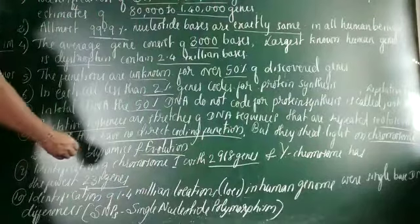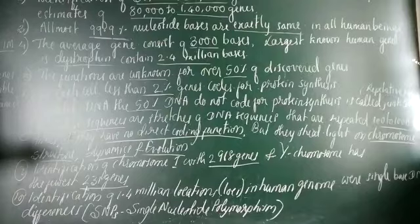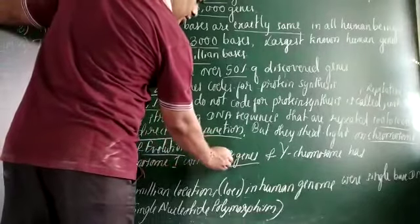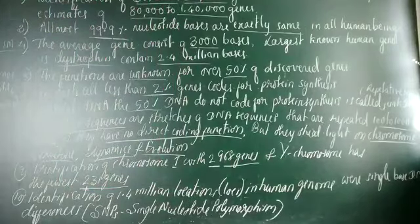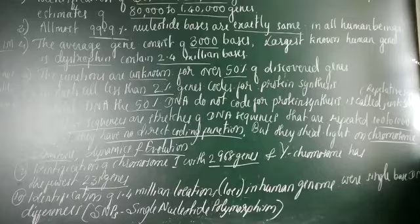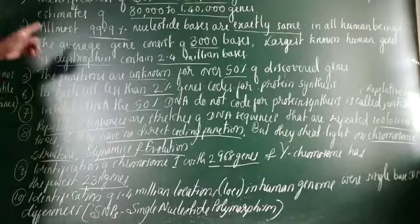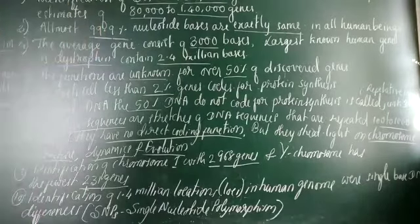In total DNA, 50% does not code for protein synthesis — this is called junk DNA, which consists of repetitive sequences repeated 100 to 1,000 times with no direct coding function. They shed light on chromosome structure, dynamics, and evolution. Identification of chromosome 1 as the largest with 2,968 genes, Y chromosome as smallest with 231 genes, and 1.4 million SNP locations in human genome are key achievements or salient features of HGPM. Finally, applications of HGPM will be discussed next.